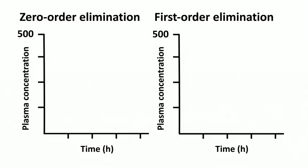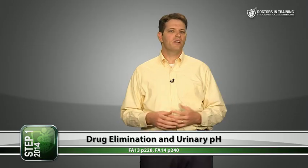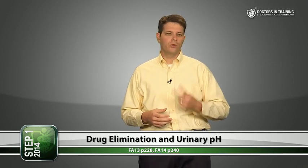But if you started with a concentration of 500 mg/L: with first-order (50%/hour) you'd be at 250 mg after one hour, 125 after two hours, and 62.5 mg after three hours. With zero-order at only 25 mg/hour, after three hours from 500 mg you'd still be at 425 mg. So starting with a higher plasma concentration, first-order elimination clears the drug much faster.